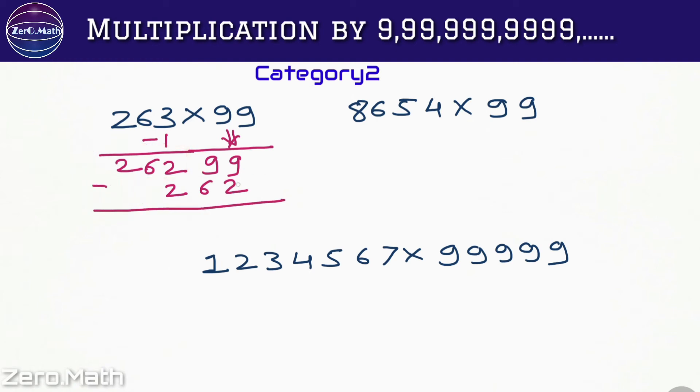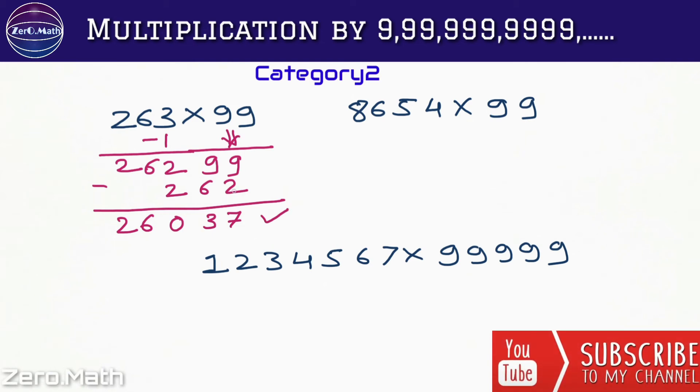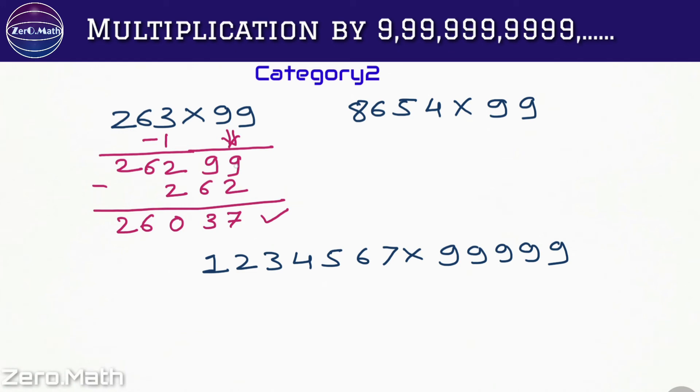So you can see we can get 9 minus 2 is 7, 9 minus 6 is 3, 2 minus 2 is 0, and this 26 as it is. 26037 is our answer. That is the only change. Since we cannot subtract this 262, I will take this 99 down and then I will subtract 262.